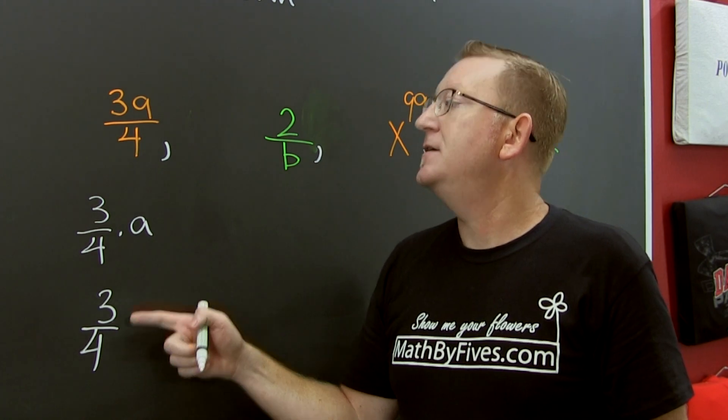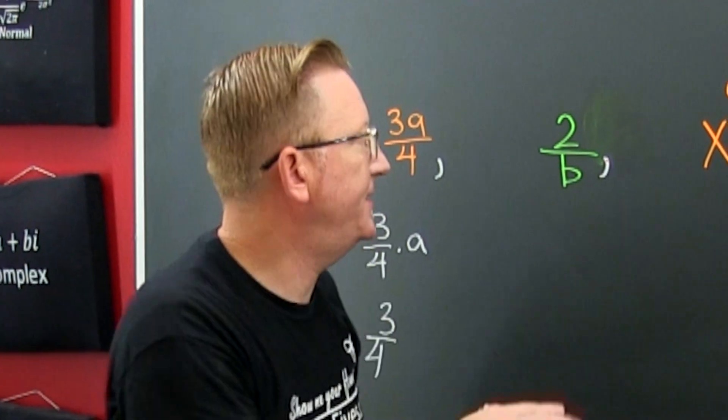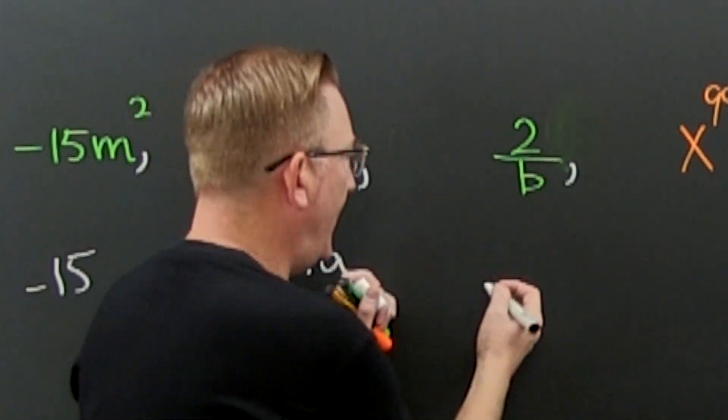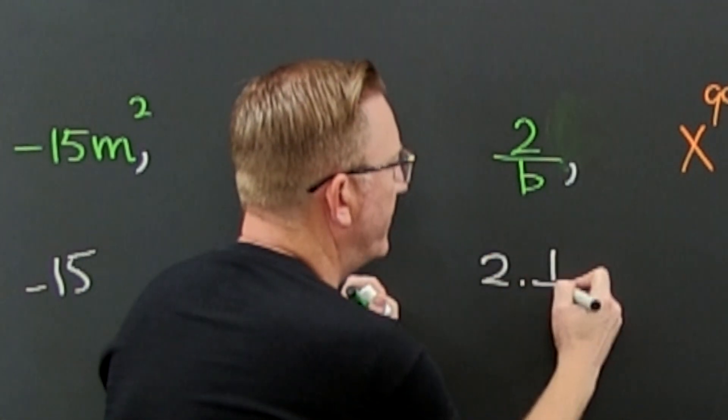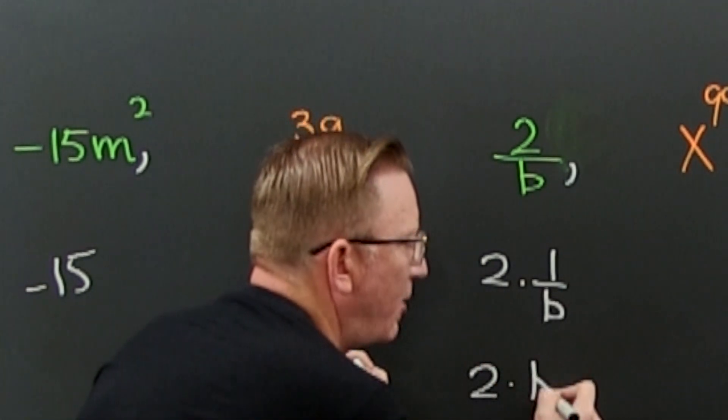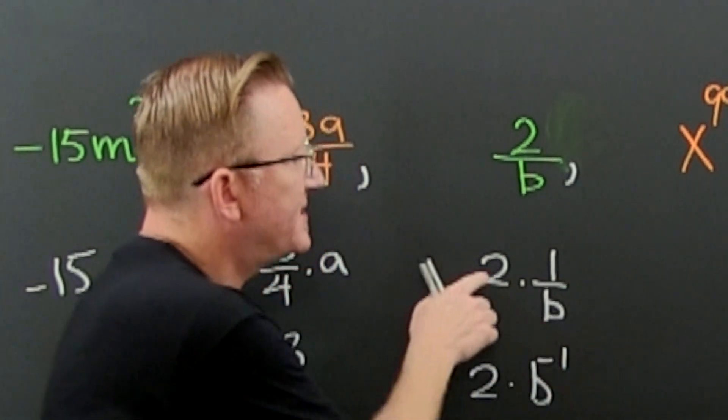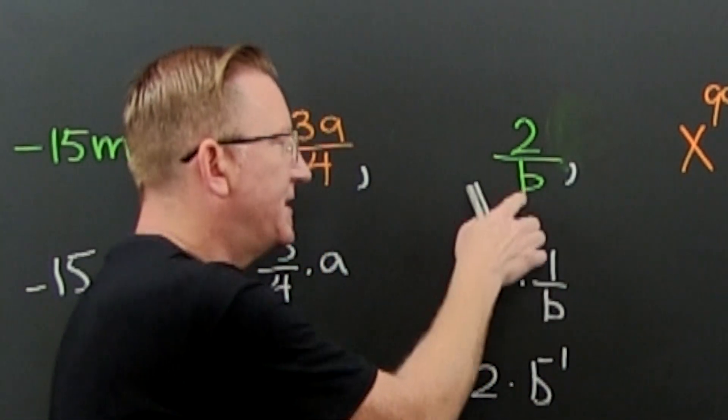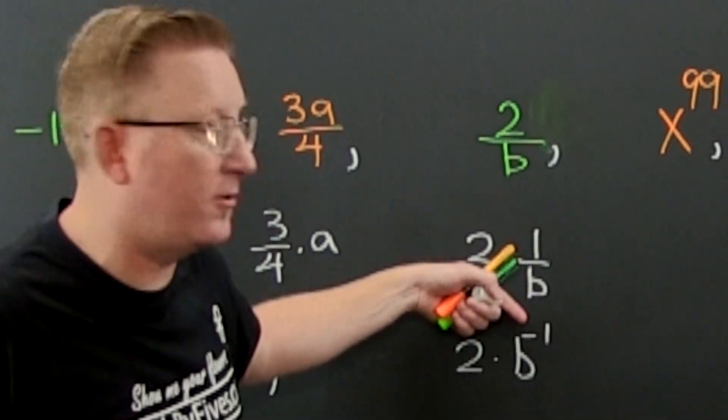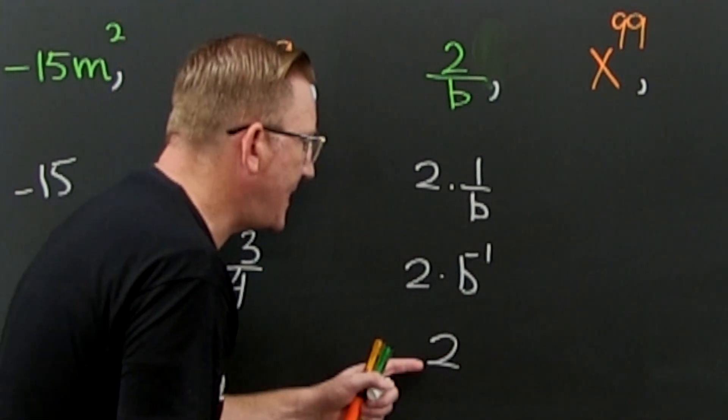Like that other one, this one needs to be massaged. I can call this two times one over b. I'm separating the number part from the letter part, the variable part. Then I see here my exponent's gonna be a minus one. And what's my numerical coefficient? It's two.